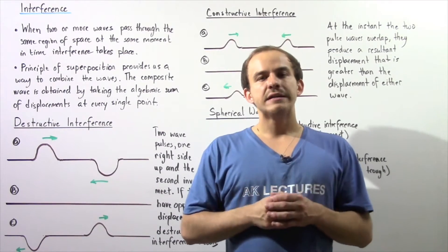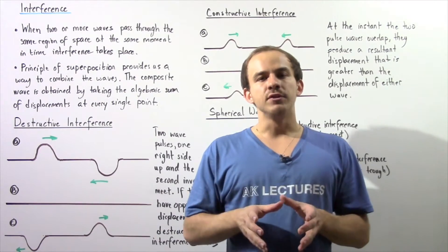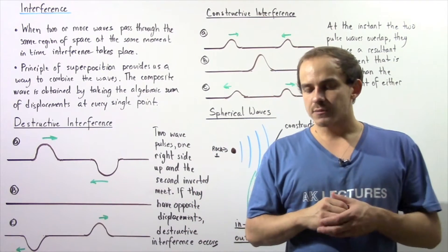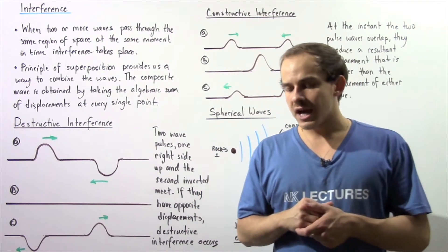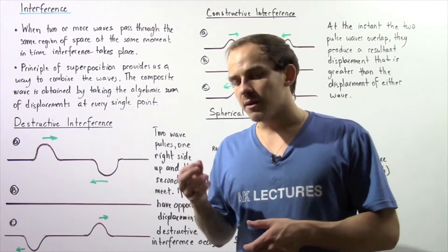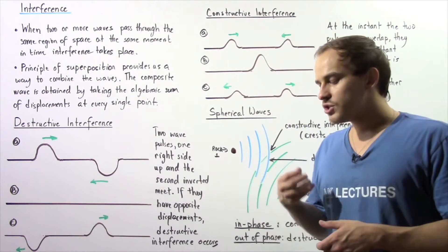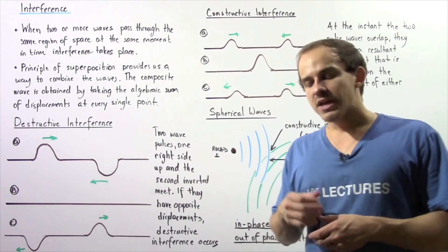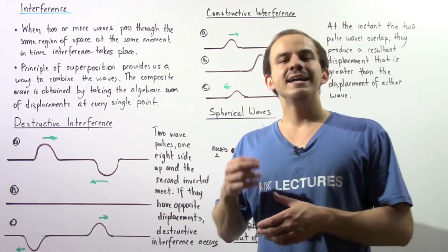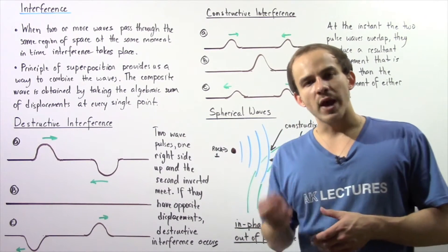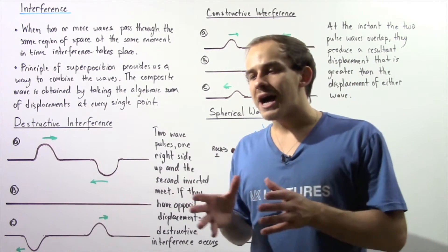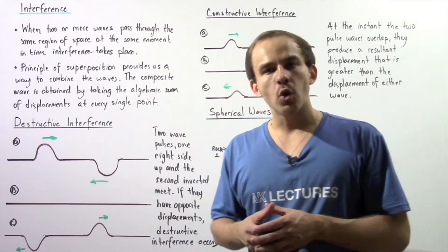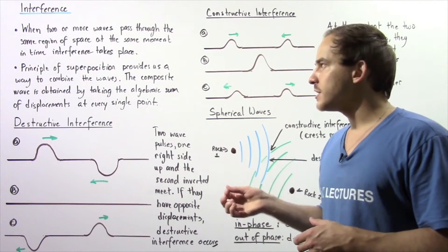When two or more waves are traveling in the same region in space at the same moment in time, those waves will combine to form a more complex wave commonly known as a composite wave. This process of the waves combining is known as wave interference.